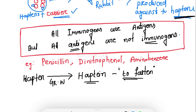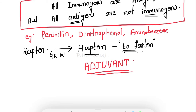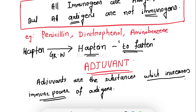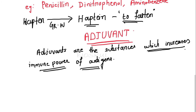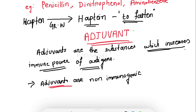Now we'll see what adjuvants are. Adjuvants are substances which increase the immune response or immunopower of antigens. Adjuvants are non-immunogenic alone, but they increase the immunopower of antigens.